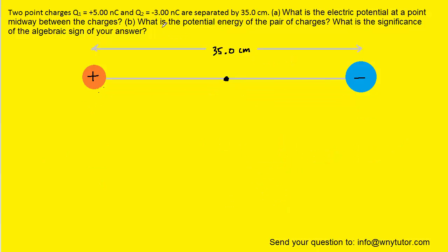Now on to part B, which asks for the potential energy of the pair of charges. More specifically, that's going to be the electrical potential energy.